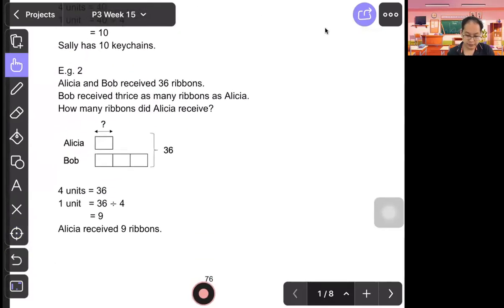Example 2: Alicia and Bob received 36 rebounds. Let's underline 36. Bob received thrice, three times as many rebounds as Alicia. How many rebounds did Alicia receive? So thrice, three units, Alicia one unit. Total 36. You can see that there are four units equal to 36. To find one unit, Alicia, we divide by 4. So it's 9. Alicia received 9 rebounds.